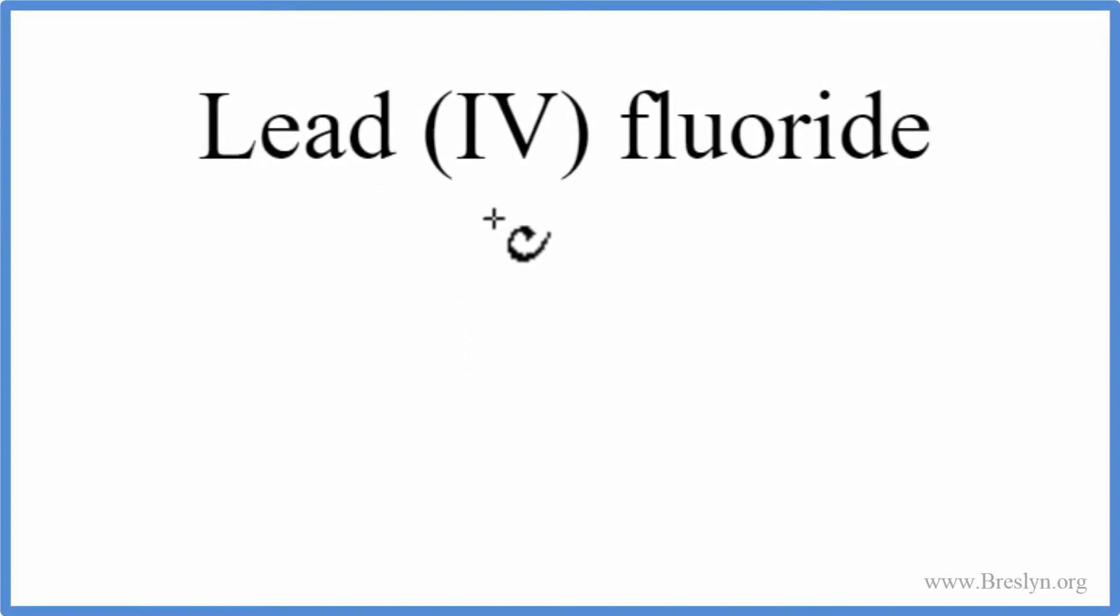To write the formula for lead four fluoride, we look up lead on the periodic table, and that's Pb. Then fluoride, we're looking for fluorine, that's F.